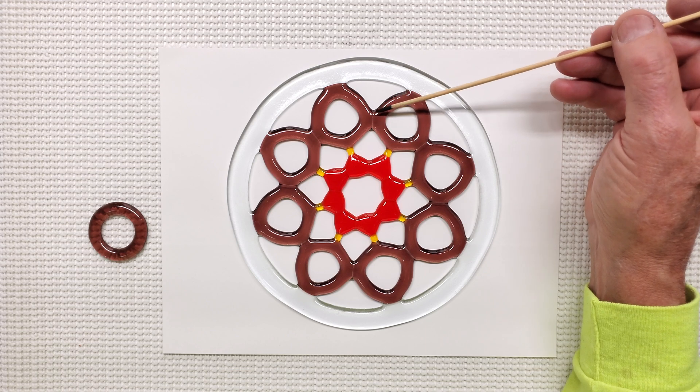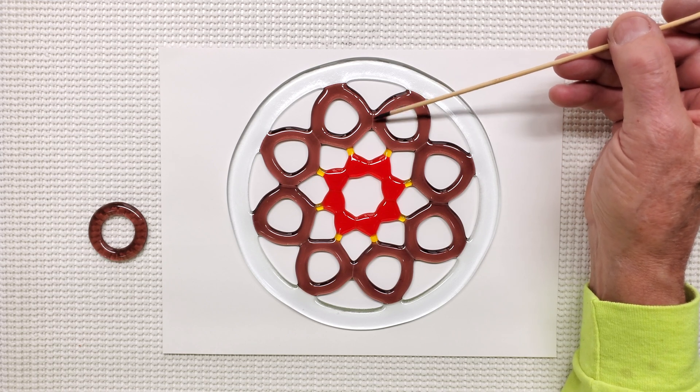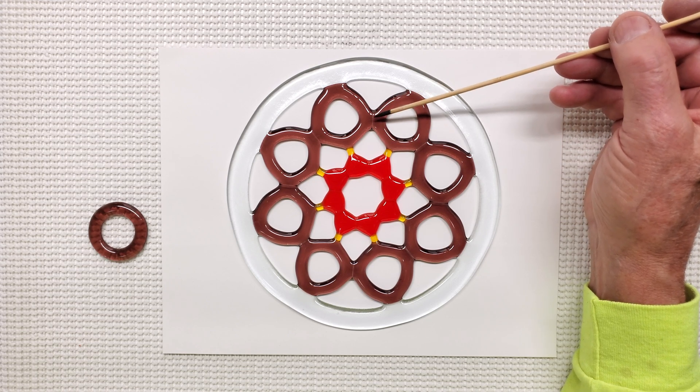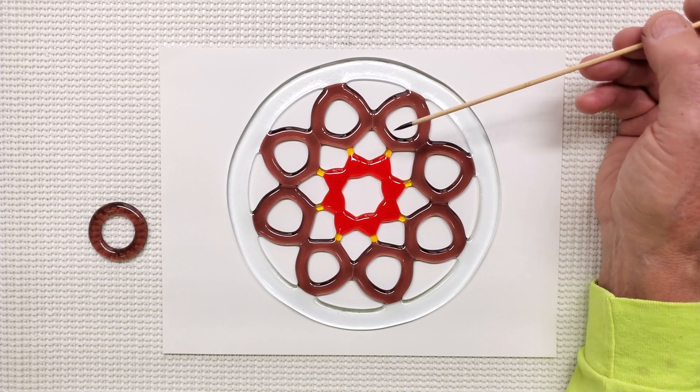The clear stringers work great for joining the purple rings to the outside ring. I think in the future I might use black stringers to join my colored rings together. I would add a nice design element.